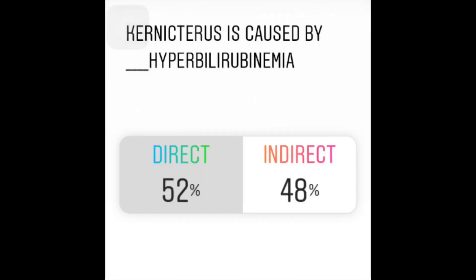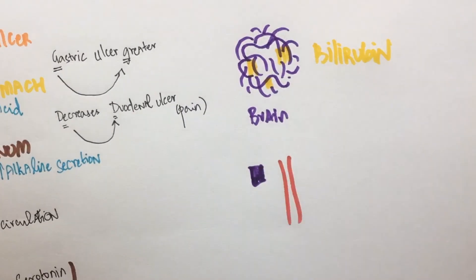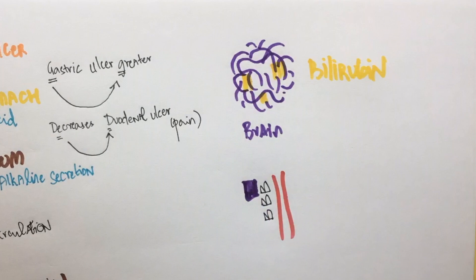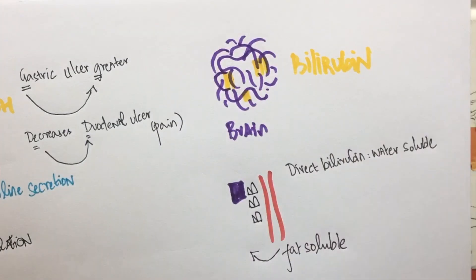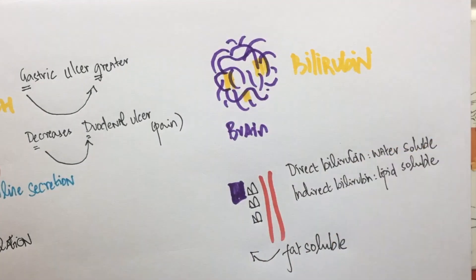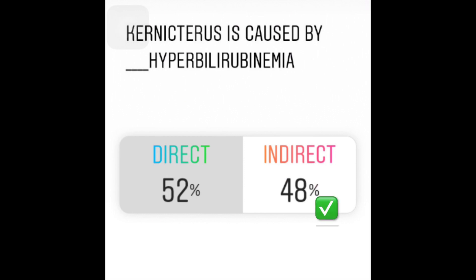Kernicterus is the deposition of bilirubin in the brain. Before bilirubin gets to the brain, it has to cross the blood-brain barrier. Only lipid-soluble substances can pass through this barrier. Direct bilirubin is conjugated and is water-soluble, while indirect bilirubin is fat-soluble. So, it is only the indirect bilirubin that can cross the blood-brain barrier and enter the brain parenchyma. Therefore, indirect and not direct bilirubin is responsible for Kernicterus.